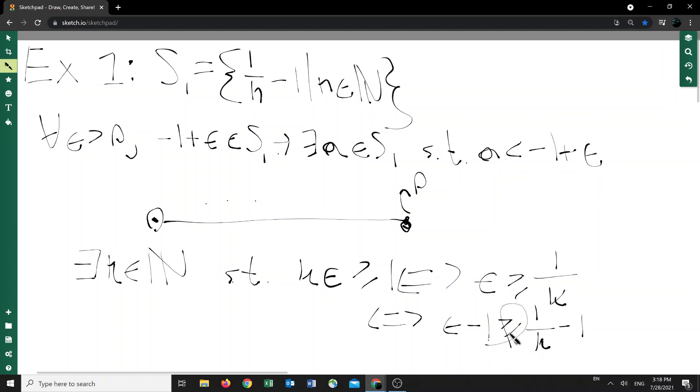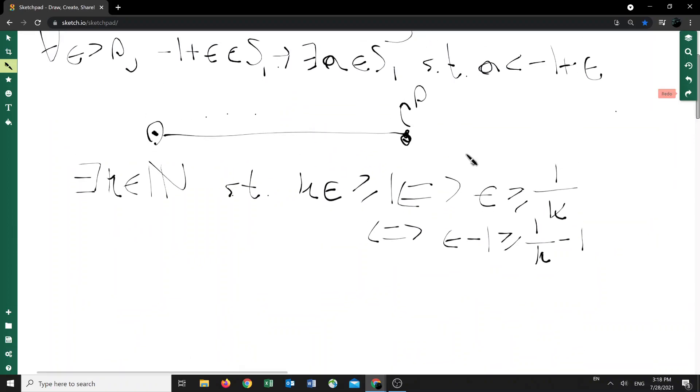Now, this greater than or equal to sign doesn't really matter. Even if it's equal, right, we still have that epsilon minus one is in S1, okay? So in other words, that just tells us that negative one is in fact the supremum, or the infimum, of the set S1. Therefore, the infimum of S1 is negative one. All right.